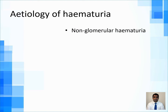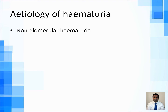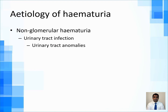Continuing with etiology, let's discuss non-glomerular causes — also called extra-glomerular or lower tract hematuria. Urinary tract infections are the commonest cause of non-glomerular hematuria; these patients present with fever, dysuria, and increased frequency. There can also be various urinary tract anomalies like hydronephrosis, where back pressure and rupture of blood vessels can cause hematuria.